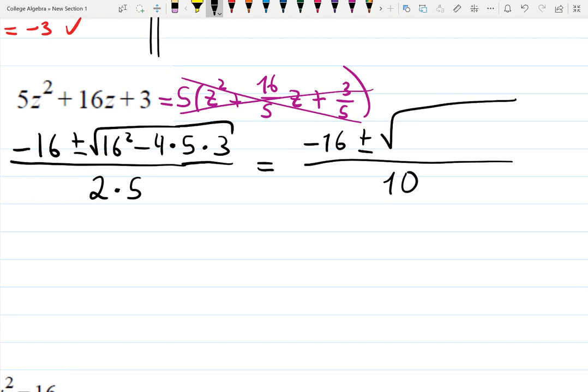Then, 16 squared is 256, minus 4 times 5, that's 20, 20 times 3, that's 60.